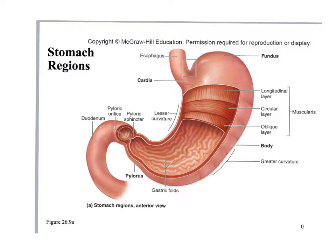The stomach is basically a ballooning of the gastrointestinal tract — the alimentary canal. It balloons out and serves as a sac for digestion. There are four parts of the stomach: the fundus at the top, the cardiac area, the body, which makes up most of it, and the pylorus region.